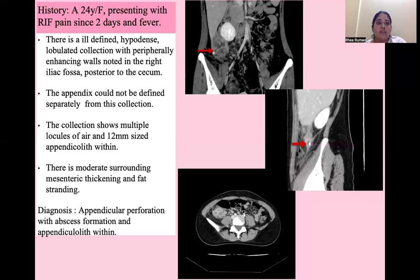The second case is a 24-year-old female presenting with right iliac fossa pain for two days with fever. There is an ill-defined hypodense loculated collection with peripherally enhancing walls noted in the right iliac fossa, posterior to the cecum. The appendix could not be defined separately from this collection. The collection shows multiple locules of air and a 12 mm sized appendicolith within, with moderate fat stranding and mesenteric thickening — suggestive of appendicular perforation with abscess formation and an appendicolith within.